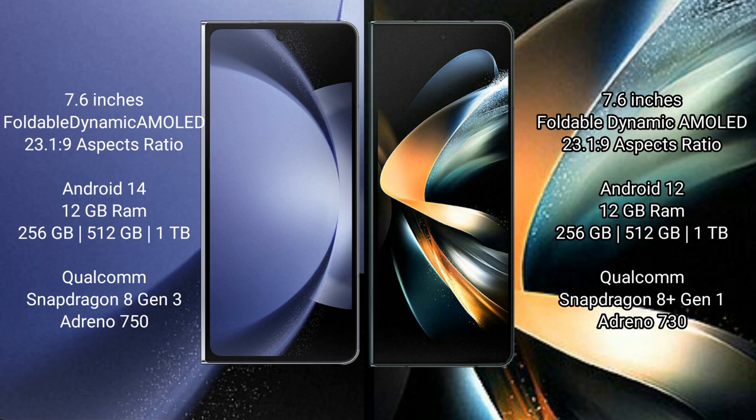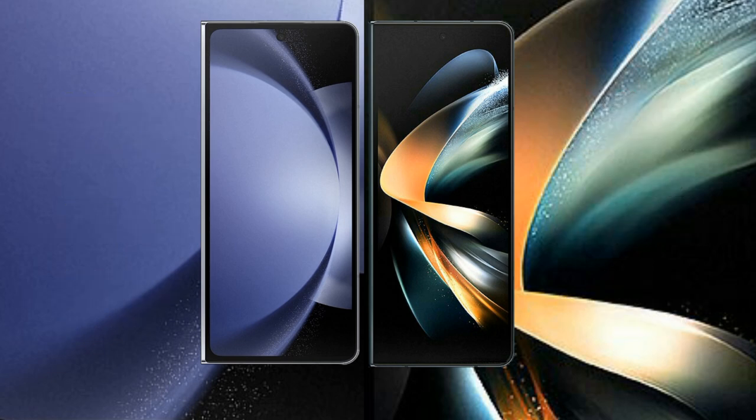Samsung Galaxy Z Fold 6 comes with 12GB RAM and 256GB, 512GB, or 1TB internal storage, with a Qualcomm Snapdragon 8 Gen 3 processor and Adreno 750 GPU. Samsung Galaxy Z Fold 4 comes with 12GB RAM and 256GB, 512GB, or 1TB internal storage, with a Qualcomm Snapdragon 8 Gen 1 processor and Adreno 730 GPU.